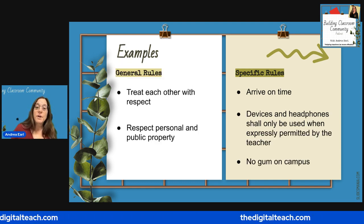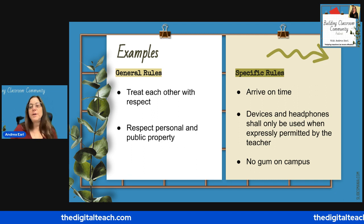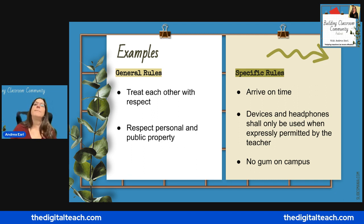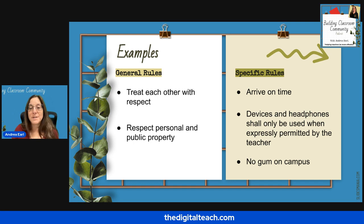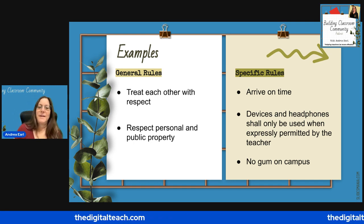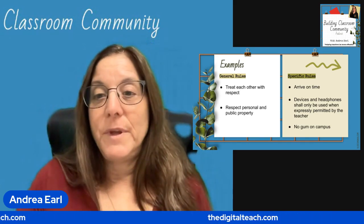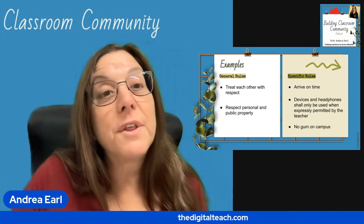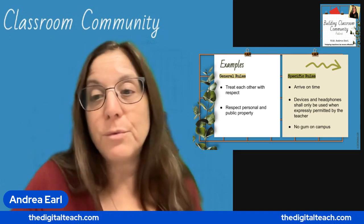But rules can also be specific. For example, arrive to class on time, or devices and headphones shall only be used when permitted by the teacher, or my personal favorite: no gum on campus — I hate stepping in gum. Specific rules clearly outline an expectation. But the thing about a rule is that you need to consider what the appropriate consequence will be if a rule is broken.